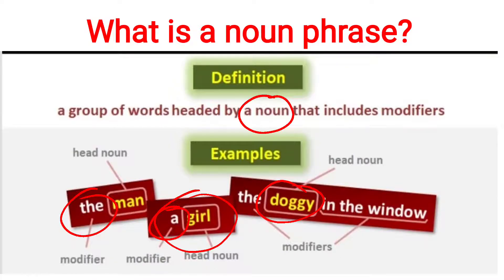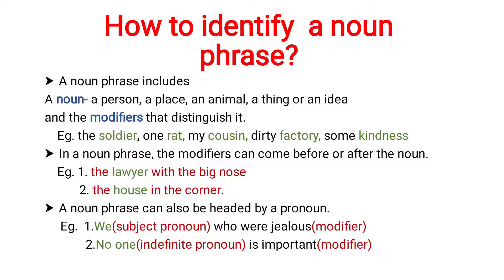I hope you have understood what is a head noun and what is a modifier. Now let's understand how to identify a noun phrase in a sentence. To identify a noun phrase we need to check whether the given phrase has a noun and a modifier. As you can see in the examples — the soldier, one rat, my cousin, dirty factory, some kindness — every phrase has a head noun and a modifier.